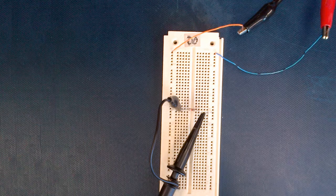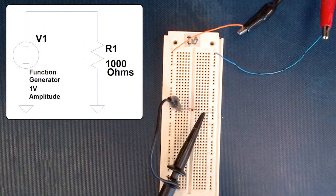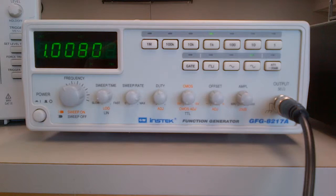We will now demonstrate how to get RMS values for different waveforms using this circuit. We will be using a function generator to get the different waveforms. The signal has a frequency of 1 kHz and an amplitude of 1 volt.